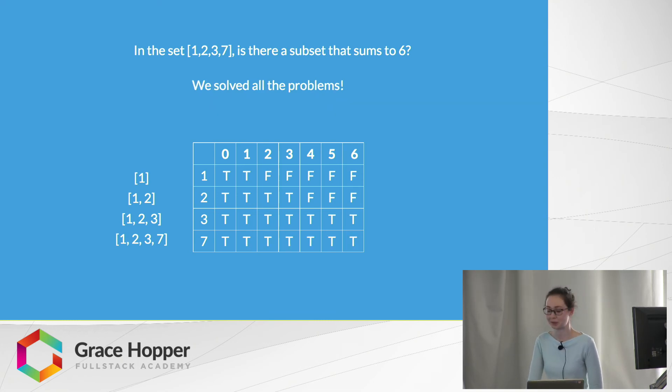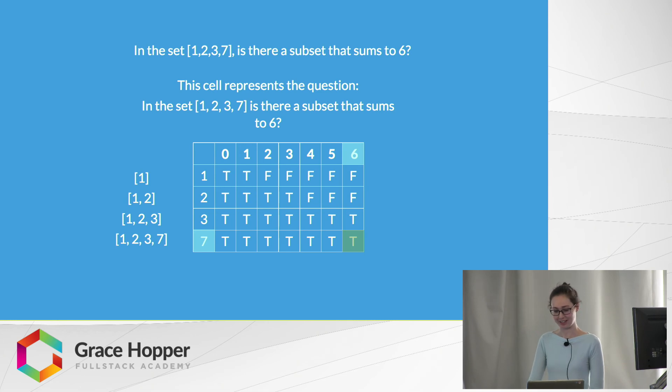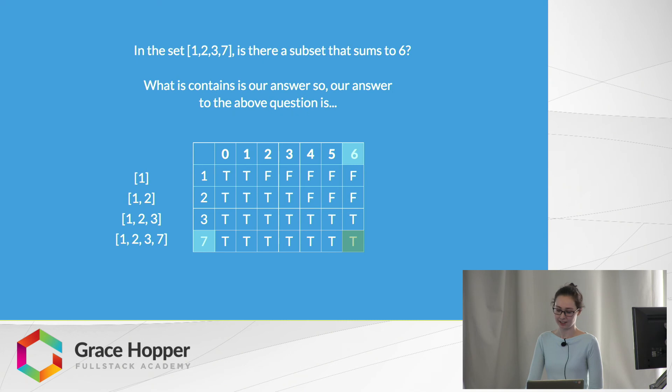So we solved all the problems, and therefore we can solve our main problem too. This cell, highlighted in green, represents the question: in the set {1, 2, 3, 7}, is there a subset that sums to 6? And what it contains is an answer, so the answer to our question is true.